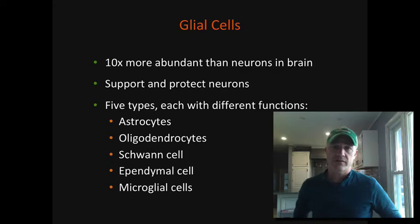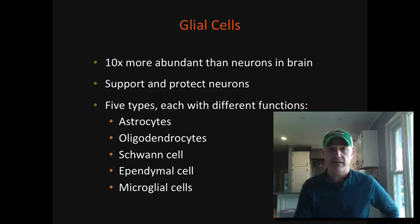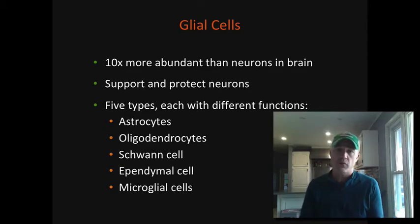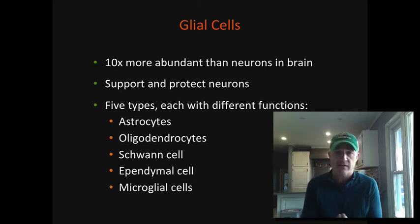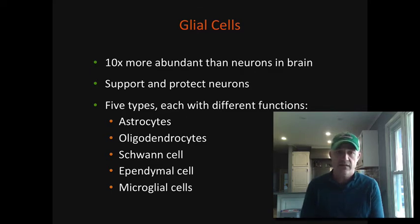Glial cells are the support cells of the nervous system. They're about ten times more abundant than the neurons — they're the cells that aid the neurons in being able to survive. There are technically six types. There's also something called a satellite cell, but there's not a lot known about those. So we're going to stick to the five main types: astrocytes, oligodendrocytes, Schwann cells, ependymal cells, and microglial cells.